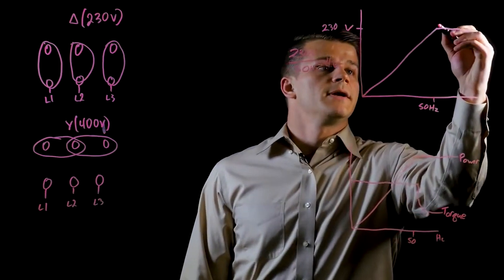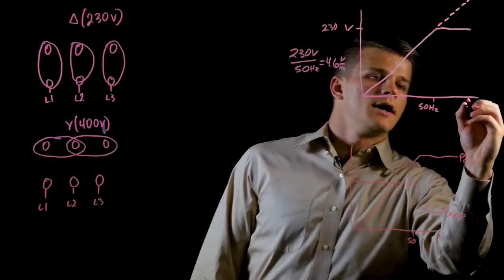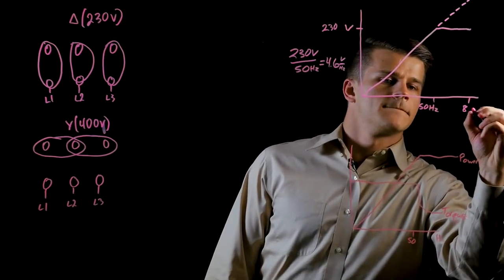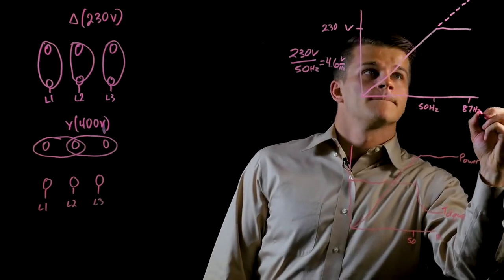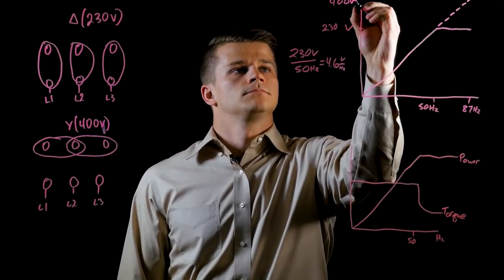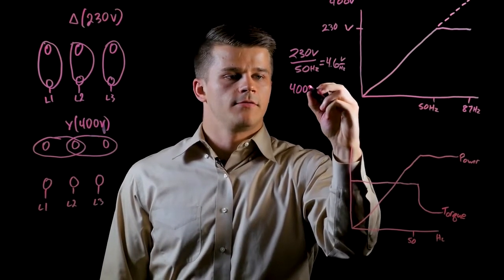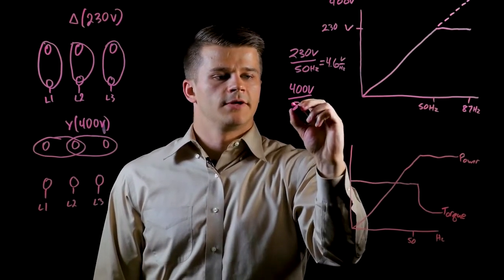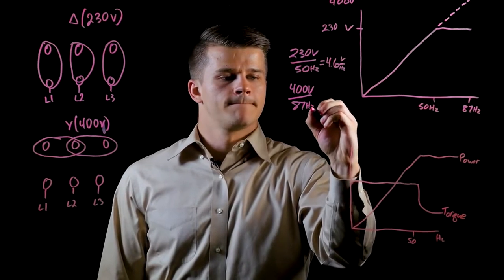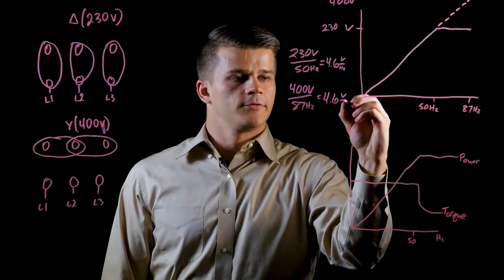If we were to imagine increasing this straight out to 87 Hertz, we go up to 400 volts. If we do the math again, we have 400 volts over 87 Hertz, and that is the same 4.6 volts per Hertz.